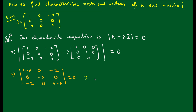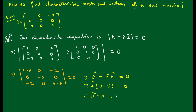After expanding the determinant, we get the characteristic equation: λ³ − 5λ² = 0. We can factor out λ², giving λ²(λ − 5) = 0. So λ² = 0 gives λ = 0, 0, and the other factor gives λ = 5. Since this is a 3×3 matrix, we get three eigenvalues: 0, 0, and 5.